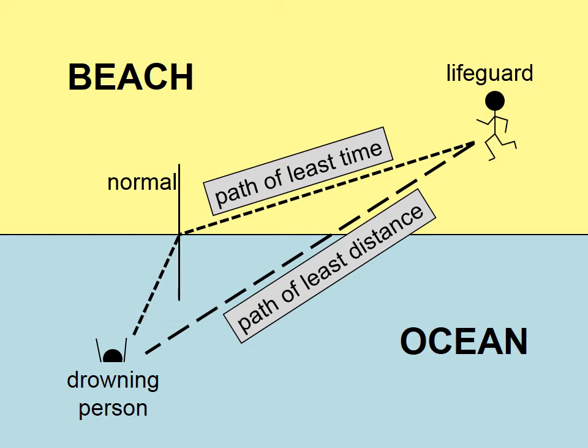Which means, at the boundary between the beach and the ocean, if we draw an imaginary line called a normal, perpendicular to the boundary, the lifeguard's path will bend toward the normal when going from a medium in which he travels faster into a medium in which he travels slower.